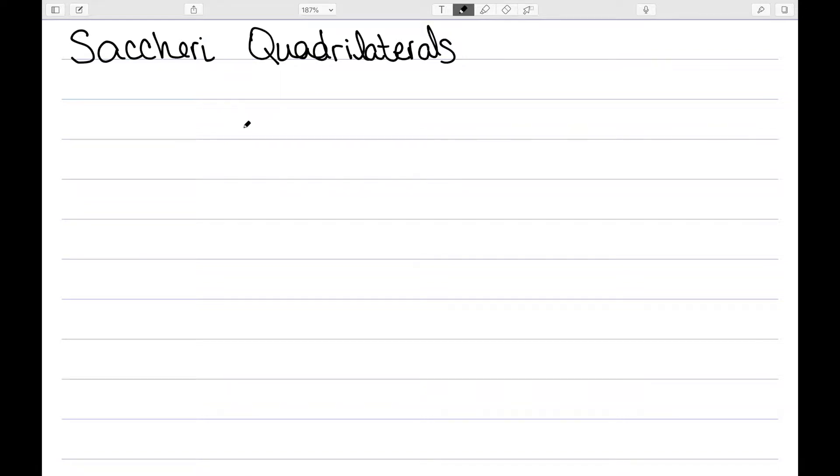Here I'm going to talk about a specific type of quadrilateral called a Saccheri quadrilateral. We need to start with two points, A and B. The main thing we need is that the distance A to B has to be less than alpha, so it has to be less than my smallest difference. In other words, these can't be two opposite poles on the sphere.